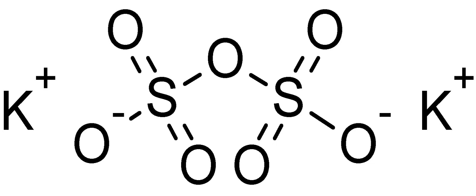2 KHSO4 yields K2S2O7 plus H2O. Temperatures above 600 degrees Celsius further decompose potassium pyrosulfate to potassium sulfate and sulfur trioxide, however.